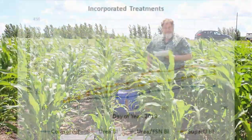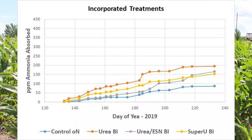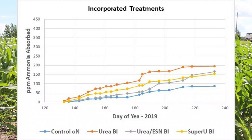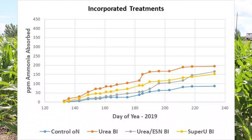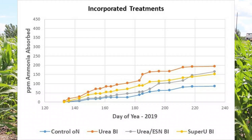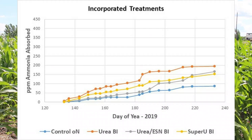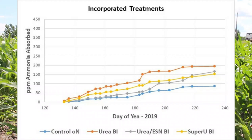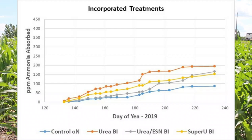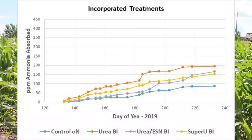What did we find in terms of ammonia emissions? ESN-urea blend and urea with urease inhibitor — that's NBPT, the active ingredient in Agrotain — reduced ammonia loss by almost half. That's pretty good. ESN also appears to be quite effective, even as good as or better than the inhibitors. So we have a couple of options in terms of sources to reduce ammonia loss.